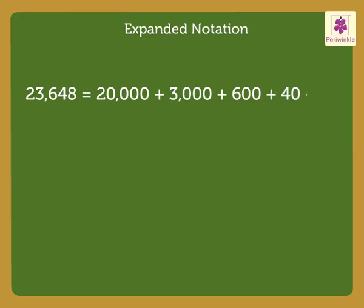Next is a tricky one: 80,005. Here, there are 0 thousands, 0 hundreds and 0 tens in 80,005. So, we do not include them in the expanded notation.